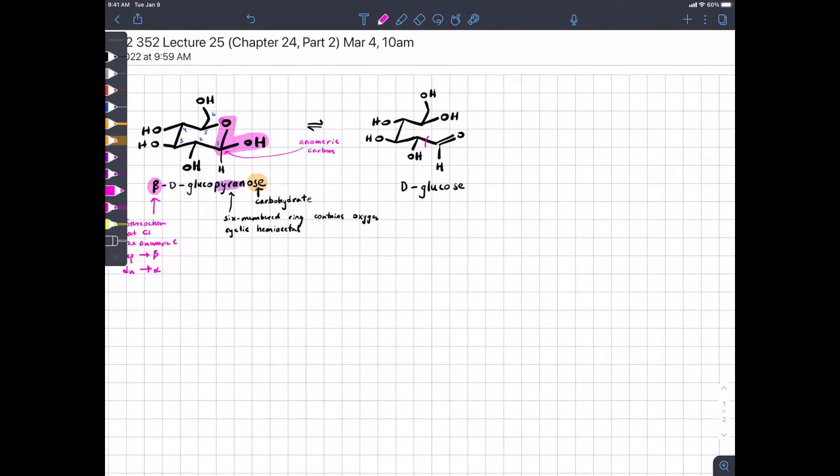And actually, if we take this open chain form of glucose, rotate around the bond between carbons 1 and 2, and then close up the cyclic hemiacetal again, we can get access to the other stereoisomer where the OH group is down. And this is called alpha-D-glucopyranose. Because you can open up either alpha or beta stereoisomers to the open chain form, these two stereoisomers are actually in equilibrium with each other. So, when you put glucose in aqueous solution, most of it is in the cyclic hemiacetal form, an equilibrating mixture of alpha and beta stereoisomers.